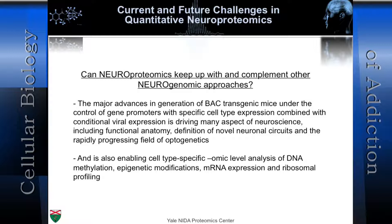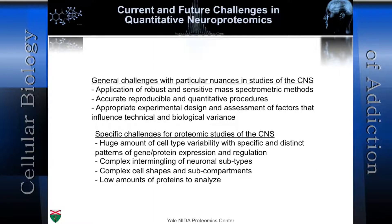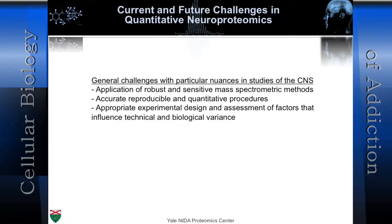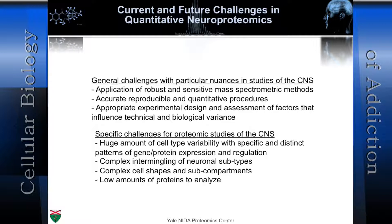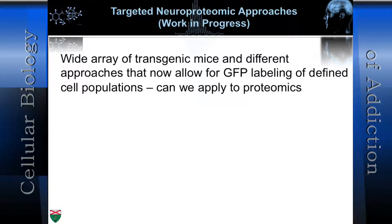Can neuroproteomics complement these neurogenomic approaches? We think so, but it's a challenge. We can't amplify proteins — that's a big problem. We need mass spectrometry: it's the most sensitive approach, working at the atto- to femtomole level. We have to be quantitative, understand experimental design, and account for technical and biological variance. Rather than looking at whole neurons, we should look at sub-proteomes — nucleus, mitochondria, synaptic vesicles — and divide up the problem.